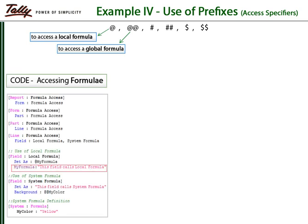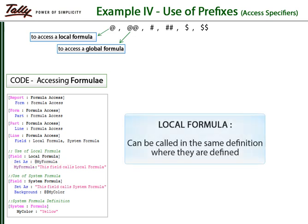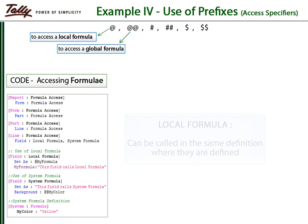A local formula has been defined in field 1. This value can be accessed in the same field by prefixing the local formula name with the @ sign. Local formulas can be used in the same definition and are helpful when the same value has to be accessed multiple times. System formulas are defined under the system formula definition and can be accessed from any definition by prefixing the system formula name with the @@ sign.